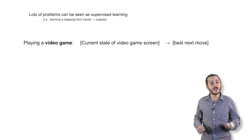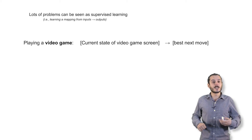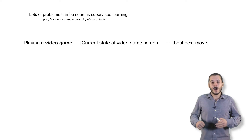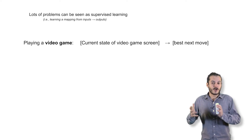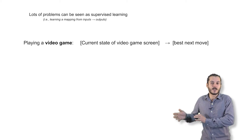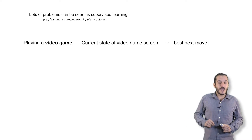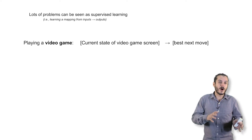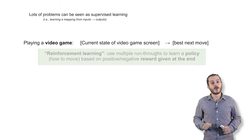There are many problems in the world that can be seen as supervised learning problems. For example, automatically learning how to play a video game is an example of a supervised learning problem — we can think of it as learning a mapping from the current state of the video game screen to what the next move should be: left, right, jump, or fire.